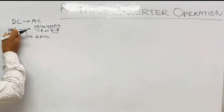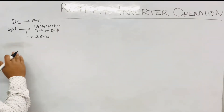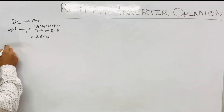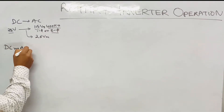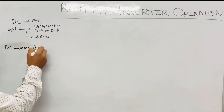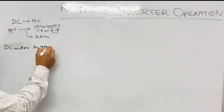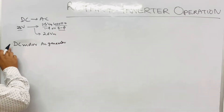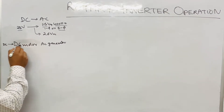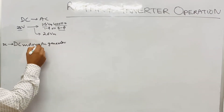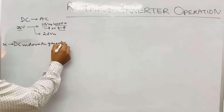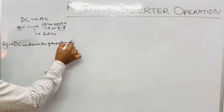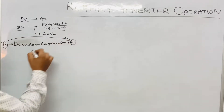Now let us discuss how this DC is converted to AC in the rotary inverter. The rotary inverter makes use of a DC motor and an AC generator. The DC motor is mechanically coupled to the AC generator, and the AC generator will produce AC. So what we are getting is DC converted to AC.